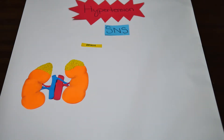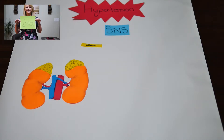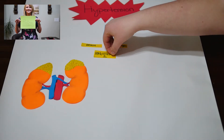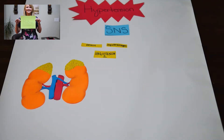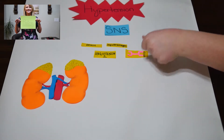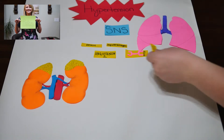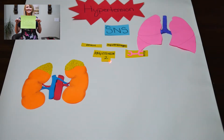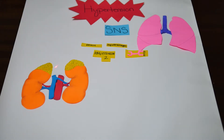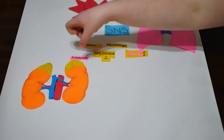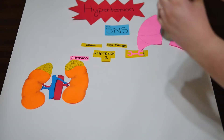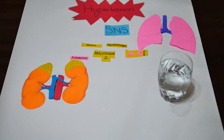The renin enters the bloodstream where a plasma protein synthesized by the liver called angiotensinogen combines with the renin to make angiotensin 1. When angiotensin 1 is combined with ACE, an enzyme from the lungs, it creates angiotensin 2. The angiotensin 2 is then sent to the adrenal cortex, which secretes aldosterone, resulting in sodium and water retention, leading to an increase in blood pressure.